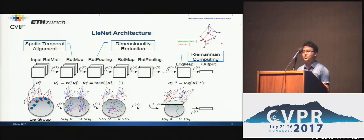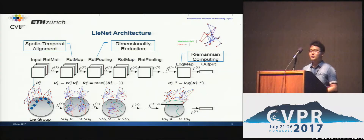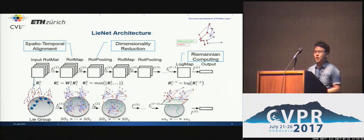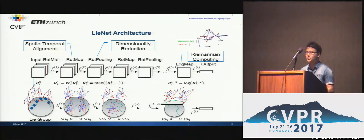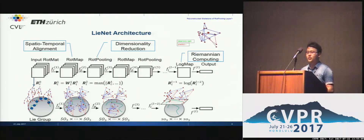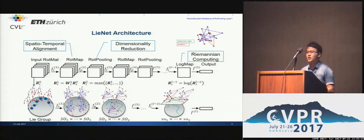To address these two issues simultaneously, our work developed a new neural network model to deeply learn Lie group representations for skeleton-based action recognition. Rotation mapping layers are devised to transform the input rotation matrices to new ones that are better in both spatial and temporal domains. Rotation pooling layers are designed to assemble the resulting rotation matrices in non-Euclidean form so that the dimensionality can be reduced. We also devised a log-activation map layer to convert the rotation matrices to Euclidean form so that regular output layers such as fully connected and softmax layers can be applied.